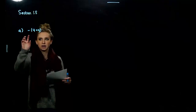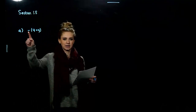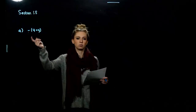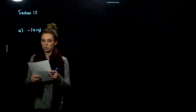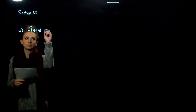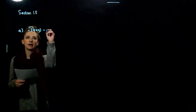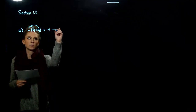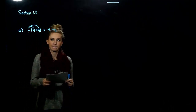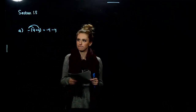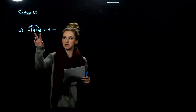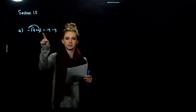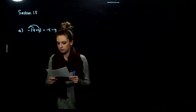In reality, this negative on the front is negative 1. To get rid of the parentheses, I have to distribute negative 1 to each term. When that happens, we're looking at negative 4 minus y. So everything on the inside changed sign — it was positive before, now it's negative.